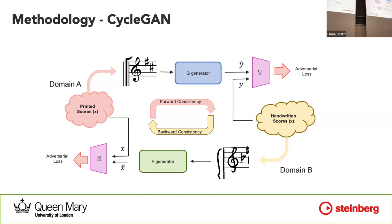Similarly, we're also generating based on the distribution here and comparing to the domain A distribution. For the forward and backward cycle consistency loss, the idea is: when you generate something from domain B, it goes back through the F generator, and we check if we are producing the same image that we started with. When we put the output through generator F, it should reproduce the original input image.